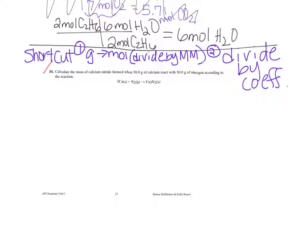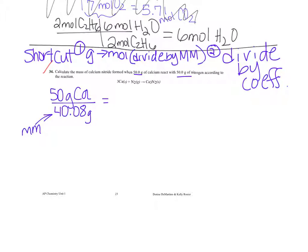Next example: calculate the mass of calcium nitride formed when 50 grams of calcium react with 50 grams of nitrogen. Someone unfamiliar with chemistry might think they're equivalent since the masses are the same, but molar masses are different. So 50 grams of calcium divided by its molar mass of 40.08 gives 1.25 moles of calcium.